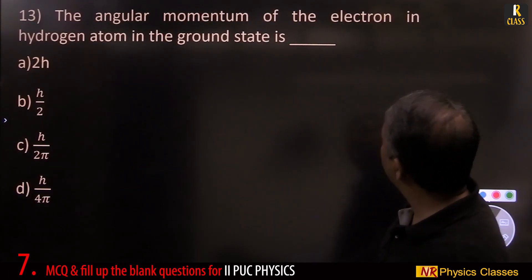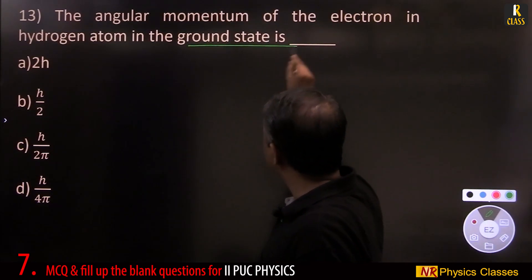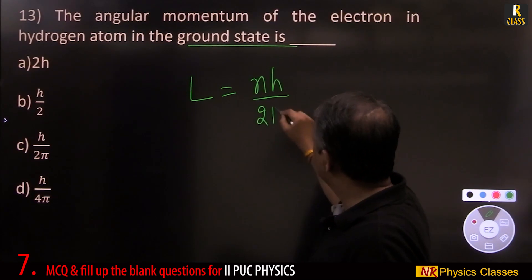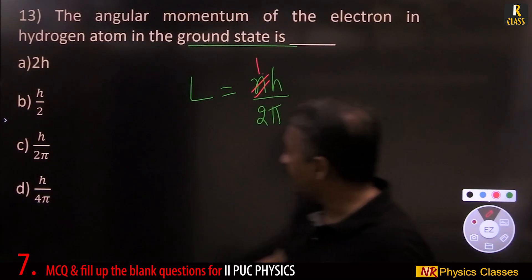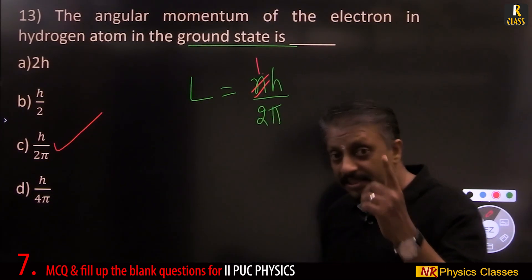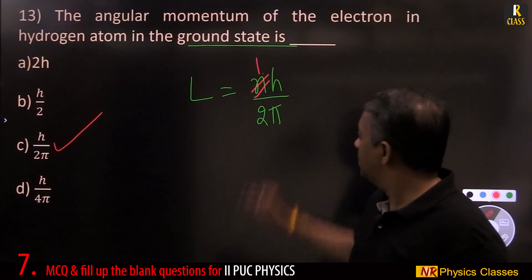The angular momentum of the electron in hydrogen atom in the ground state. Angular momentum should be equal to n h by 2 pi. For ground state, n should be equal to 1. So it is h by 2 pi. In first excited state, next level is n equal to 2.